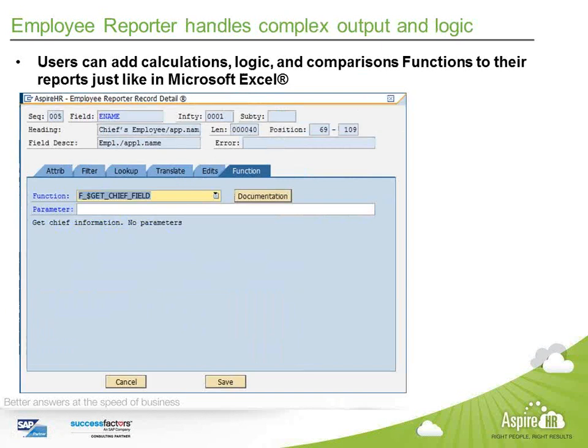A lookup is our way of adding functionality similar to Microsoft Excel — we take the concept of functions you can add to cells. One function shown here is 'get chief field,' which when applied to a field pulls back specific information using parameters. When applied to any employee's information, instead of returning the employee's value for that field, it returns their chief's value. If you apply this get chief function to the employee's name, the column will include the chief's name. The same could apply to cost center, org unit, phone number, or any other details you care to include.